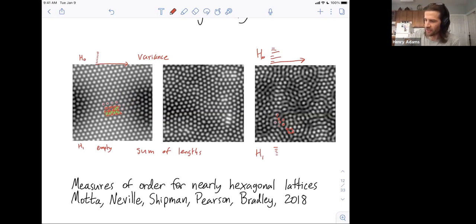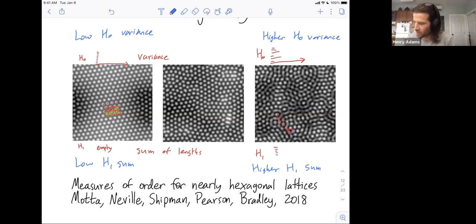So your hypothesis might be that a hexagonal grid has low H0 variance. All the bars have exactly the same length, so the variance is zero. And they have low H1 sum. The one-dimensional homology barcode is empty. Whereas in this more irregular pattern, you're going to have higher variance in the lengths of the connected components. Different things are going to connect up at different times. And you're going to have a higher H1 sum. You are going to have some squares that form due to the irregularities in the pattern, even though they get filled in.